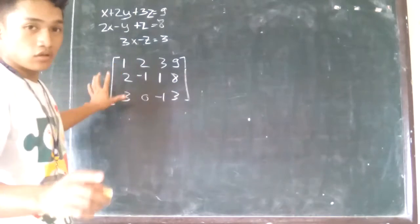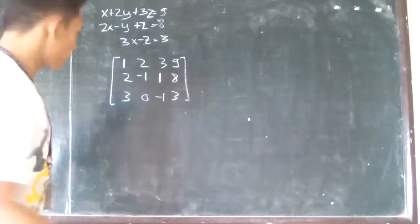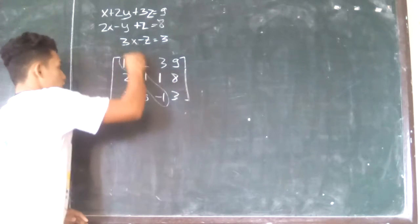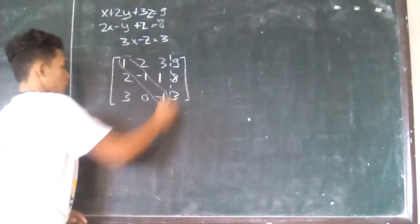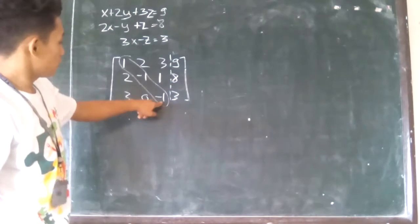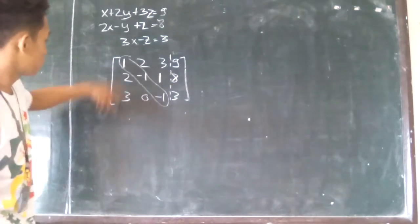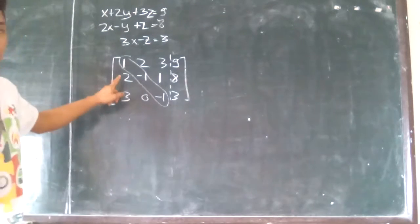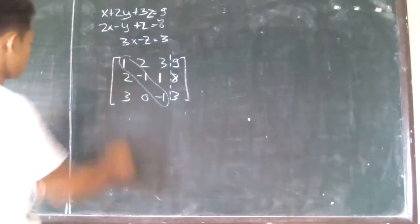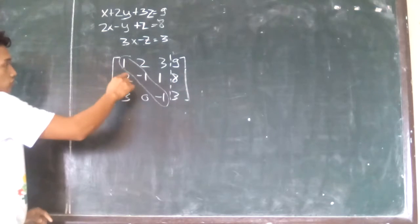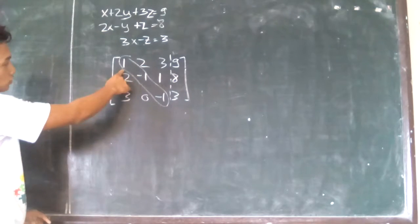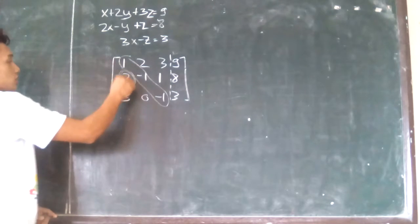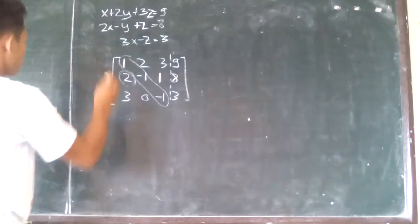In Gaussian elimination, remember that we make the diagonal all 1s, and the lower side here we make all 0s. So this first element is already 1, so we need to make this element below it become 0.